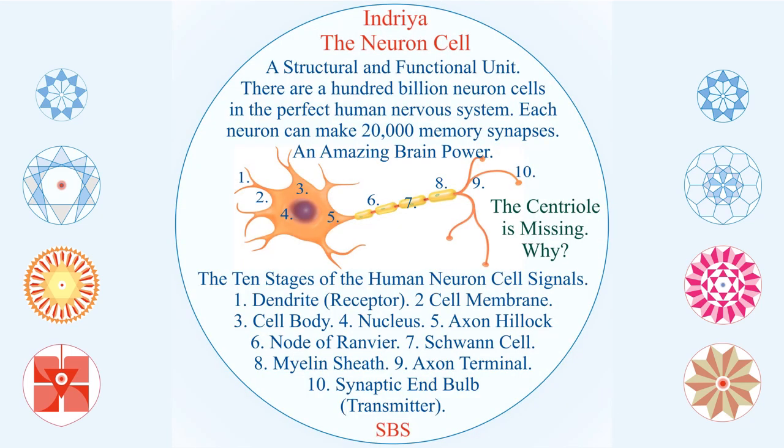Five Indriya — five senses — are the sense organs. But information from sense organs is carried by nerves or neuron cells to the central nervous system of the spinal cord as well as the brain. Each neuron is made of 10 stages — something I am trying to emphasize in nature. We must keep every stage, whether in the structural or functional part. Indriya are neuron cells which carry information. There are 100 billion neuron cells, which are the structural and functional units of the nervous system, and each neuron cell can make 20,000 memory synapses.